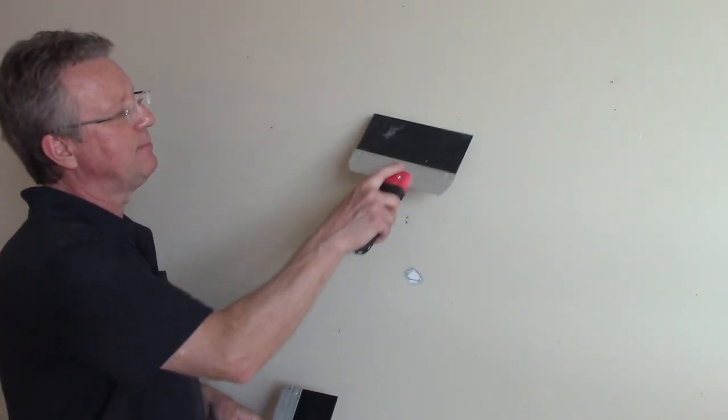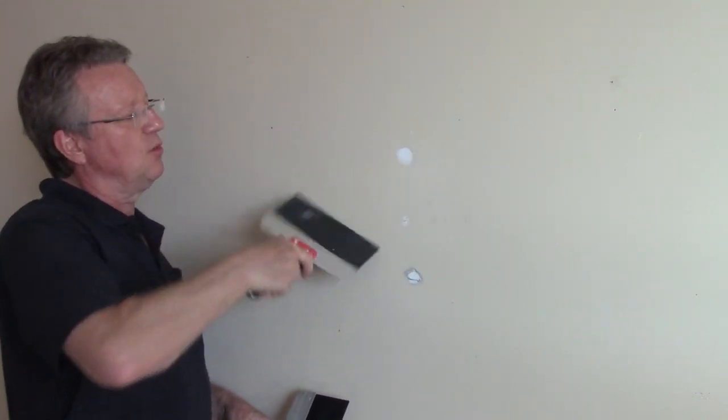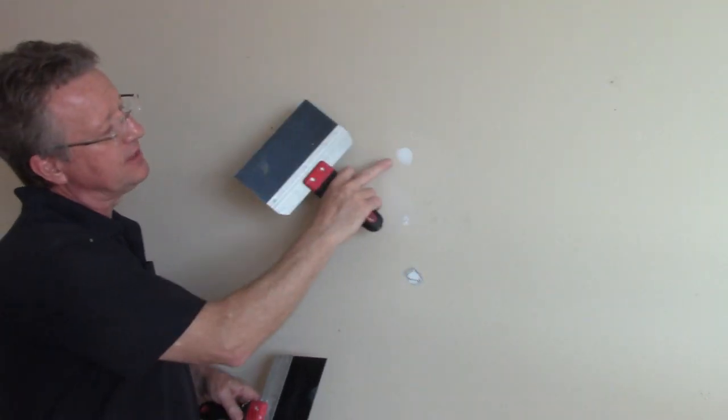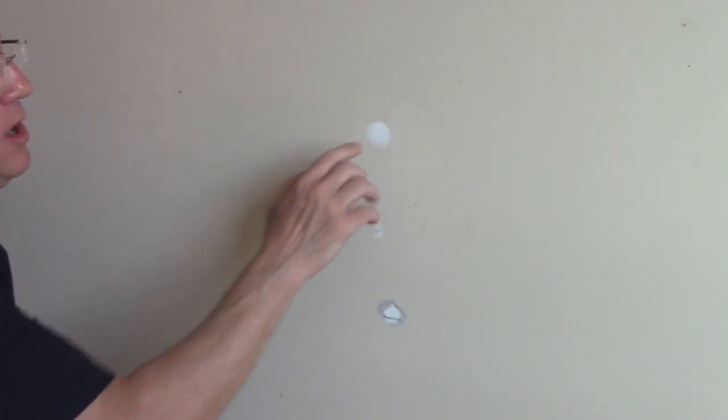When you apply the spackle, you want to pull it tight against the surface, whether it's a wall or a ceiling, and just go back and forth until it's smooth, and you don't want any excess on the wall.